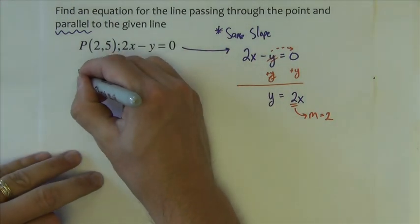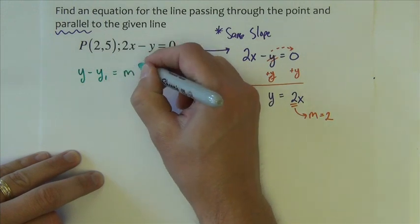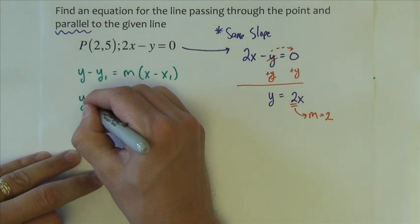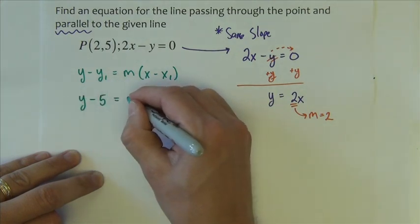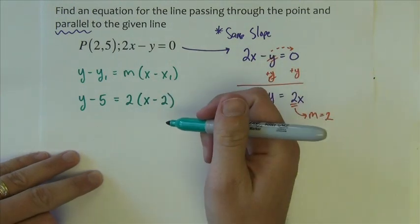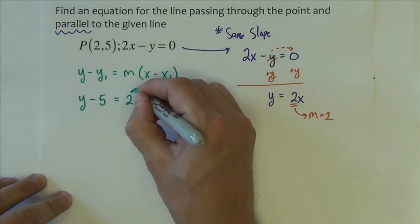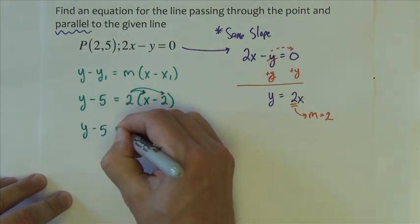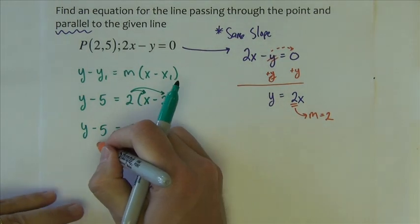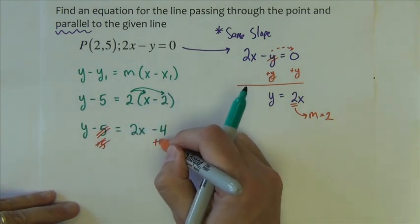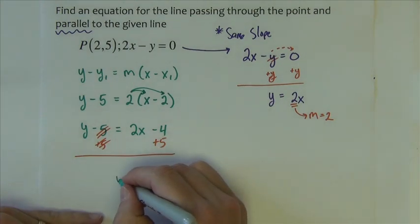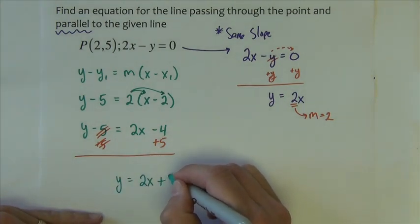So we're going to use point slope, y minus y1 equals m, x minus x1. Our point is 2, 5, so y minus 5 equals our slope 2, then x minus the x, which is 2. Distribute the 2, so we have y minus 5 equals 2x minus 4. We can add the 5 across, giving us y equals 2x plus 1.